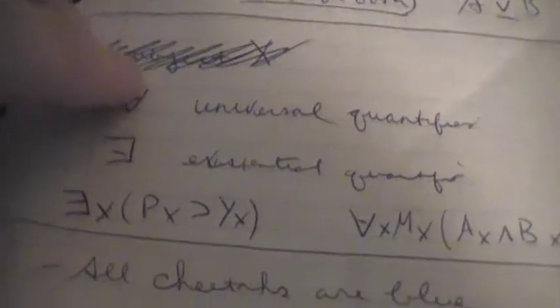First, predicate logic involves either one of these two things. This is a universal quantifier, which means when it's put in a sentence of logic it means 'all.' This is an existential quantifier, which means when it's put with a sentence it means 'some.'